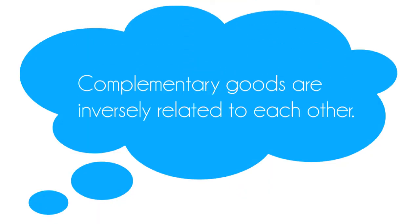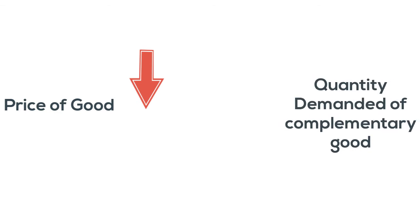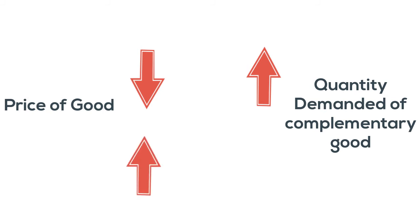Complementary goods are inversely related to each other. It means that when the price of one good falls and increases its demand, the quantity demanded of the complementary good also increases. Similarly, when the price of one good rises and reduces its demand, it may reduce the demand for the complementary good as well.